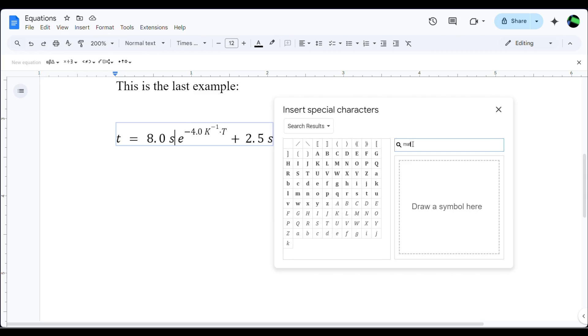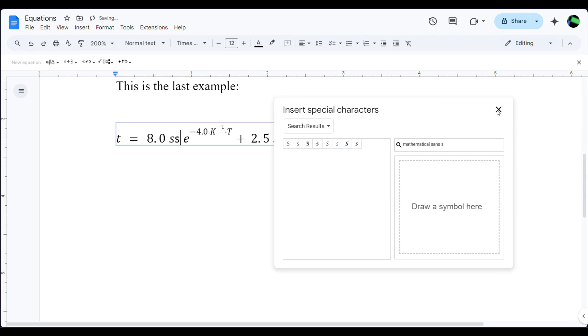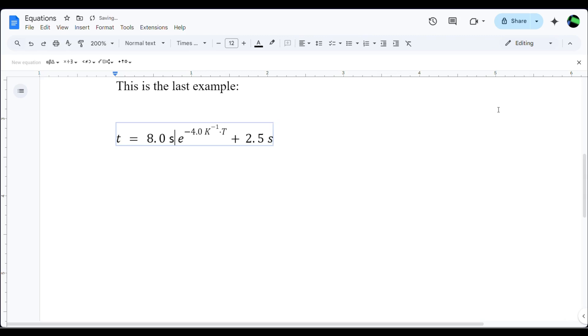Insert Special Characters, mathematical sans S. That's a little messy. Maybe put parentheses around this 8 seconds coefficient. That looks a bit nicer.